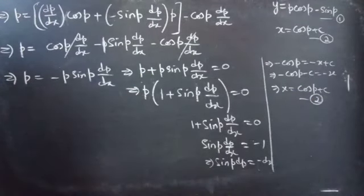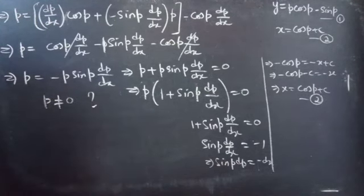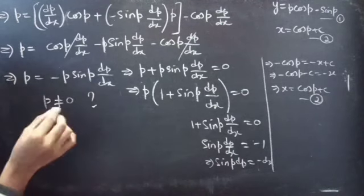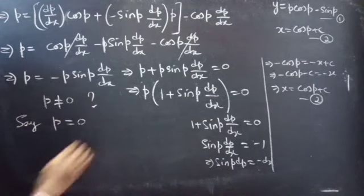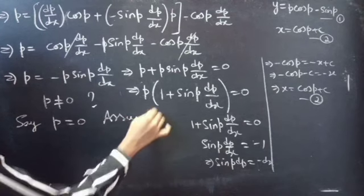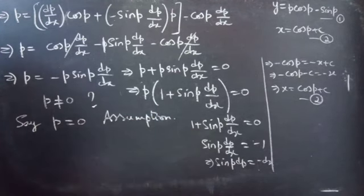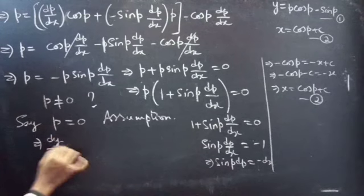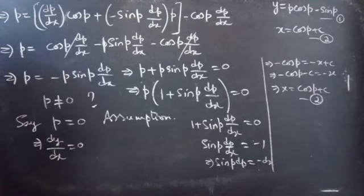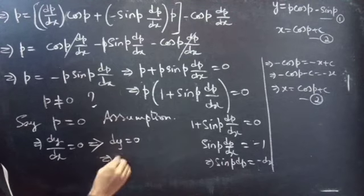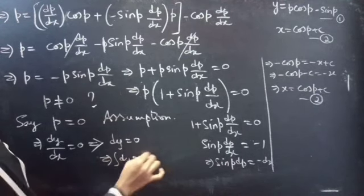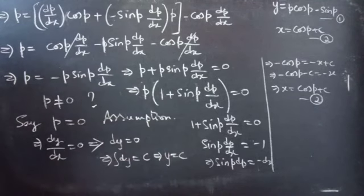Now what about p equals 0? p cannot be 0. Why are we saying p is not equal to 0? What happens if p equals 0? If we assume p equals 0, what is p? p is dy/dx. From this we get dy equals 0, and by integrating we get y equals c.